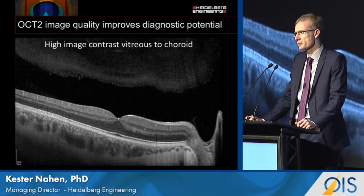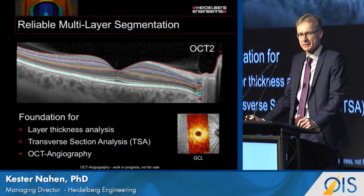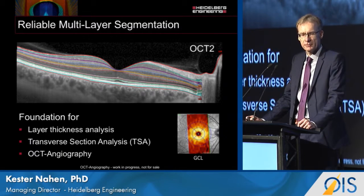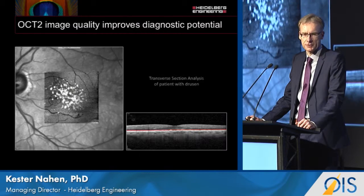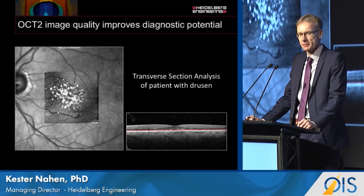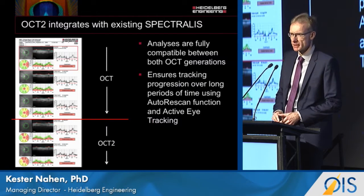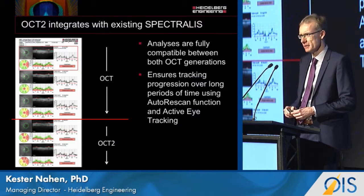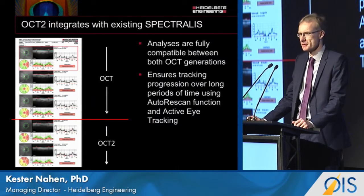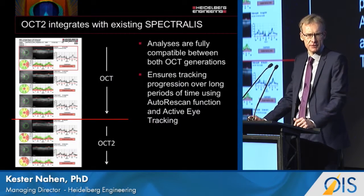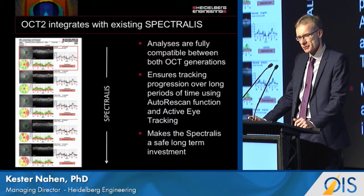There is very high image contrast from the vitreous down to the choroid, and this supports very reliable multi-layer segmentation, which we now offer on the Spectralis. It is the foundation for layer thickness analysis, cross-section analysis, and OCT angiography. Here you can see how the improved image quality supports the visualization of drusen. The OCT2 integrates fully into the existing Spectralis platform, and all analyses are fully compatible with the previously introduced OCT generation, ensuring tracking of progression over time.